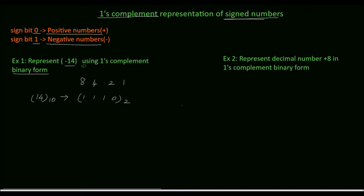Next we'll find the one's complement of the binary number. To find one's complement, just invert the binary number — 0 should be written as 1 and 1 should be written as 0. This is the one's complement of the binary number.